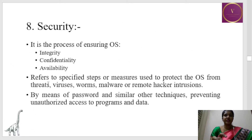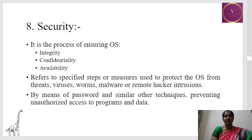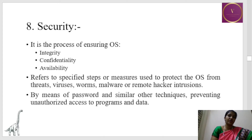Next is security. When it comes to security, it refers to the process of maintaining OS integrity, confidentiality, and availability — that is, the correctness of the system, confidentiality meaning only authorized users are allowed to access particular resources, and availability meaning it maintains records of what resources are available for what process. This is mainly done with the help of a password protection system or similar systems, and it is mainly to protect the OS from threats like viruses, worms, malware, or remote hackers accessing OS information.